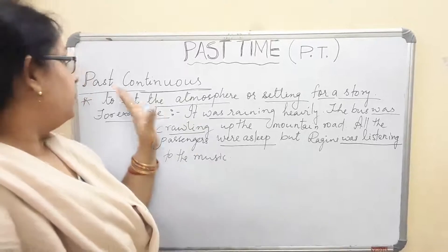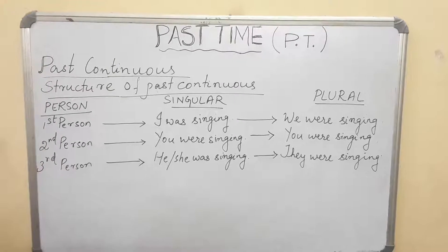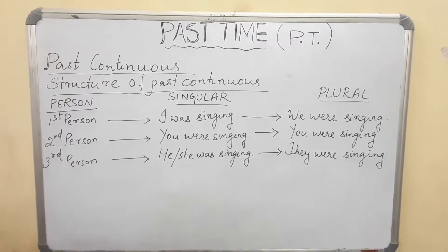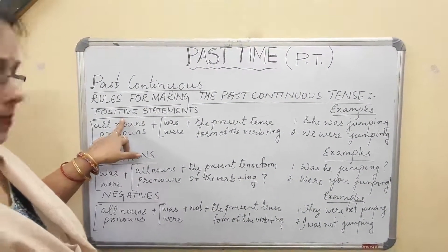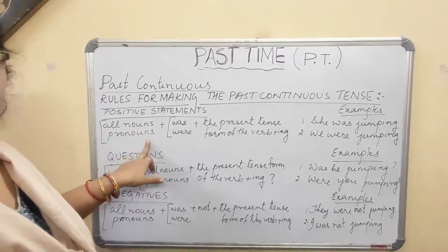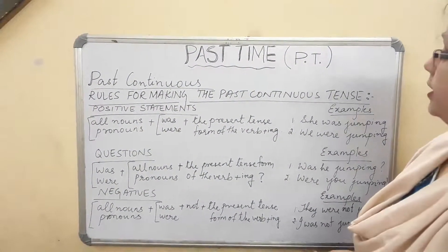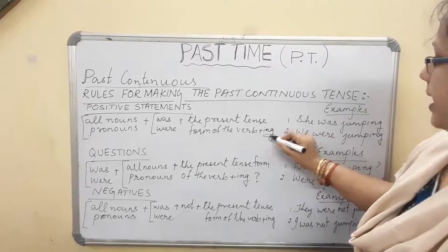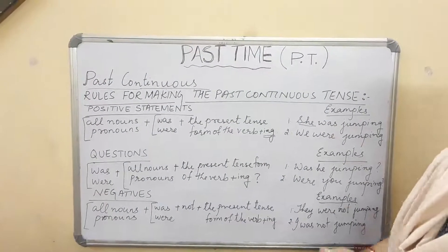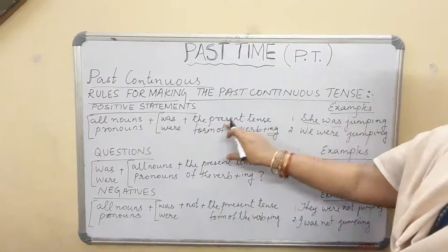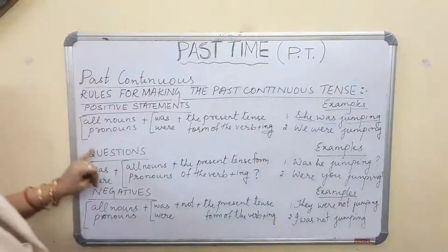Now I am going to show you the structure of the past continuous tense. For a positive statement, the rule is: all nouns or pronouns plus 'was' or 'were' plus the present tense form of the verb plus '-ing'. Remember, for continuous tense we always add '-ing'. For example: 'She was jumping.' Or: 'We were jumping.'